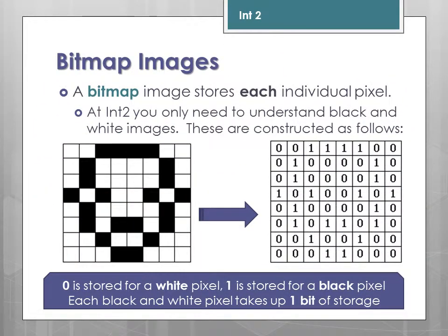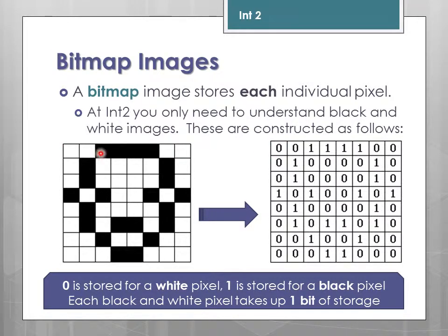A bitmap image stores each individual pixel. At Int 2, you only need to understand black and white images. These are constructed as follows: in a very basic 8x8 pixel image, a white pixel corresponds to a 0, and every black pixel corresponds to a 1.